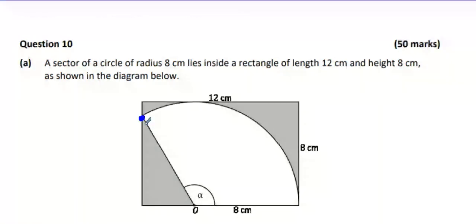I'm going to say the hypotenuse is 8. Why is the hypotenuse 8? It's a radius. I'm going to say that this length is 4. Can anybody tell me why this length is 4? 12 minus 8.